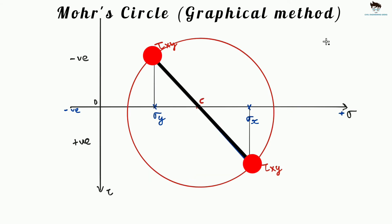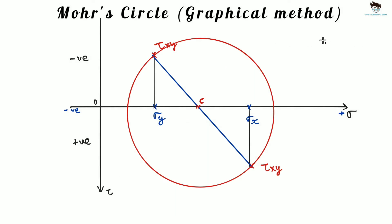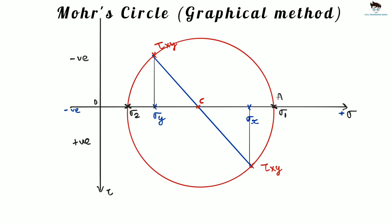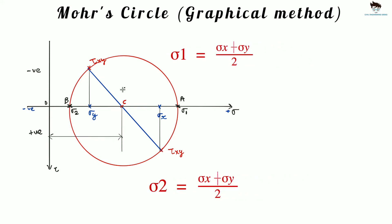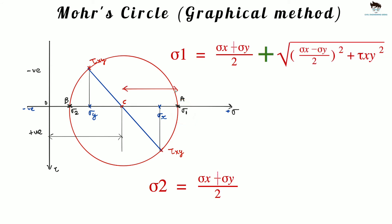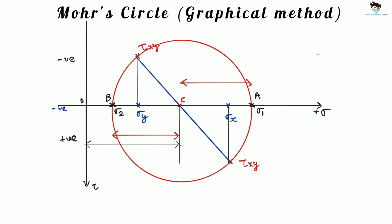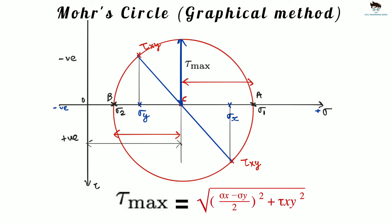Each point on the Mohr's circle represents the normal and shear stress for a particular plane on the stress tensor. We can also determine the principal stresses from the Mohr's circle. Since we already know that the shear stresses are zero at the x-axis, the points where the Mohr's circle meets the x-axis define the principal stresses. Point A is the maximum principal stress and point B is the minimum principal stress. Principal stresses can be calculated by taking the x-coordinate of the center of the circle and adding or subtracting the radius.